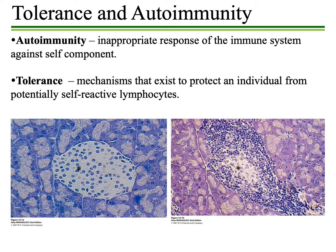An example of an autoimmune disorder shown in this slide is diabetes mellitus, also known as type 1 diabetes. On the left-hand side you see a normal islet of Langerhans cells in the pancreas — normally functioning cells that produce insulin. On the right, you see an individual with type 1 diabetes, where there is an infiltration of lymphocytes into those islet of Langerhans cells, causing their destruction and inhibiting the production of insulin.